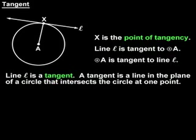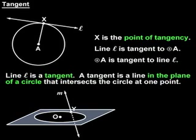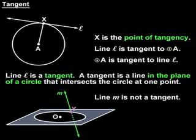Finally, notice that in the definition of a tangent, we have to say that the tangent is a line in the plane of a circle. The reason for this is shown in the diagram below. Notice that line M intersects circle O at one point, point y, but it is not a tangent to the circle because the line does not lie on the plane of the circle. So when writing out the definition of a tangent, make sure to include the words in the plane of the circle. We'll see you next time.